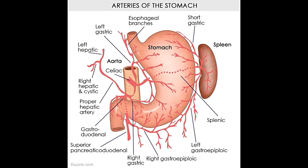The right gastric artery arises from the hepatic artery, running to the left of the stomach's lesser curvature and the pyloric end of the stomach, where it joins the left gastric artery, providing blood to the lower right section of the stomach. The short gastric arteries supply blood to the fundus. The left and right gastroepiploic arteries provide blood to the upper and lower sections of the greater curvature of the stomach, respectively. The veins of the stomach correspond to the aforementioned arteries. The right and left gastric veins drain into the portal vein, while the short gastric veins and the left gastroepiploic vein return blood into the splenic vein. The right gastroepiploic vein returns blood into the superior mesenteric vein.